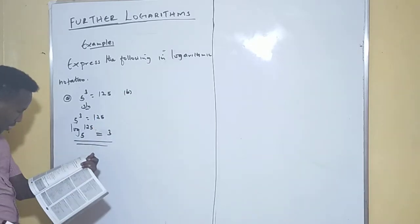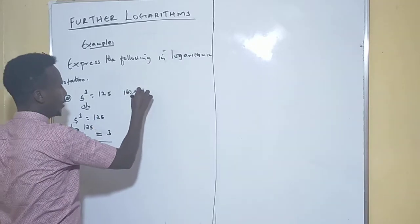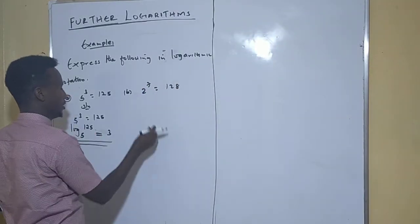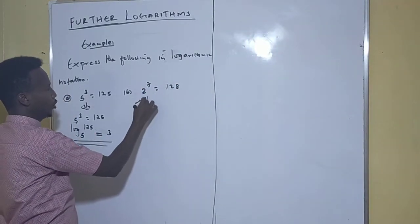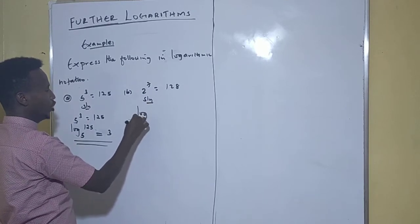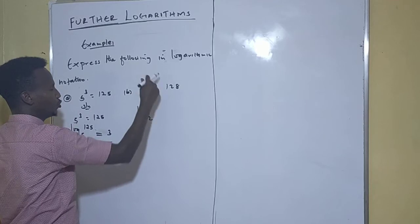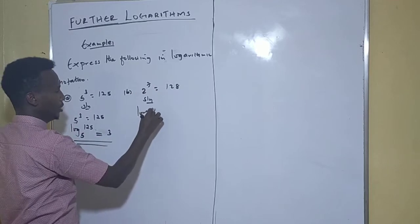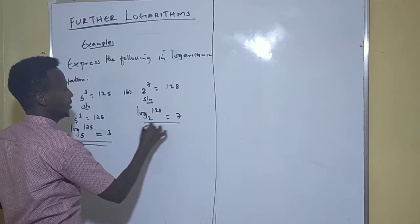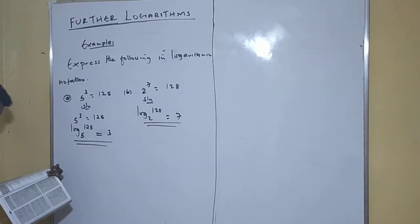Let me solve another one. We have 2 to the power 7 is equal to 128. This is the index form. When you come to the solution, you are going to say log base 2, retain this one, interchange the two positions: log base 2 of 128 is equal to 7. This is the final answer.